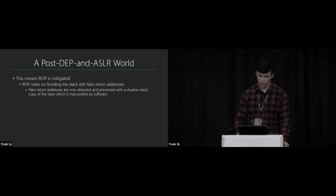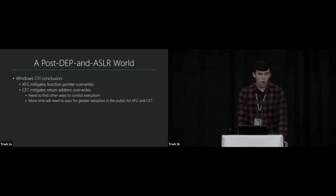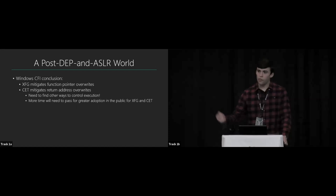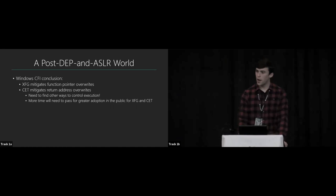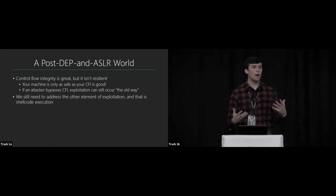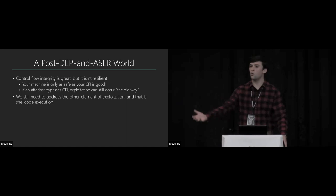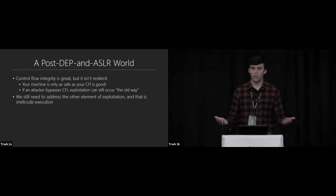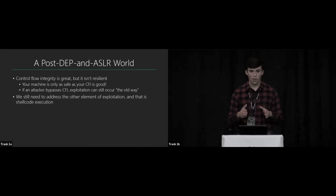Windows CFI strategy: Extended Flow Guard mitigates function pointer overwrites, and CET protects return address overwrites. That addresses the first staple of exploitation — hijacking control flow. But more time will need to pass for greater adoption. CFI is great but not resilient: if we bypass these mitigations, we just go back to code reuse and mark shellcode as executable. Our machines are only as safe as our CFI is good. We still need to address the other tenet of exploitation: preventing shellcode execution.